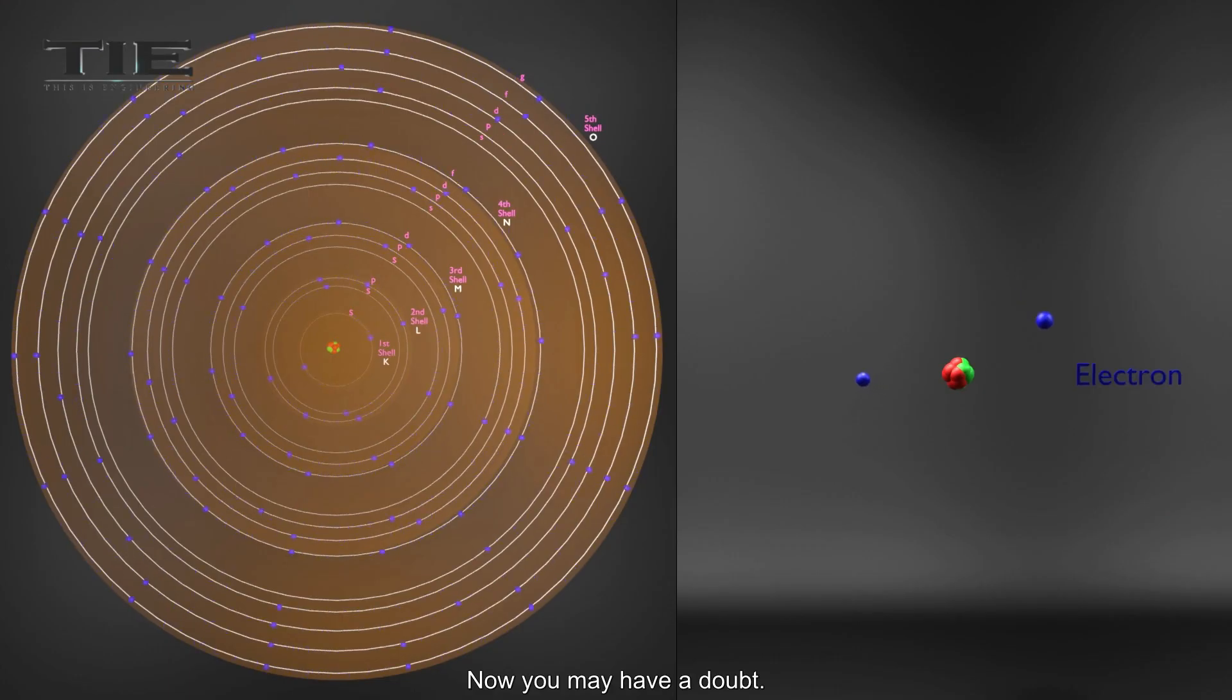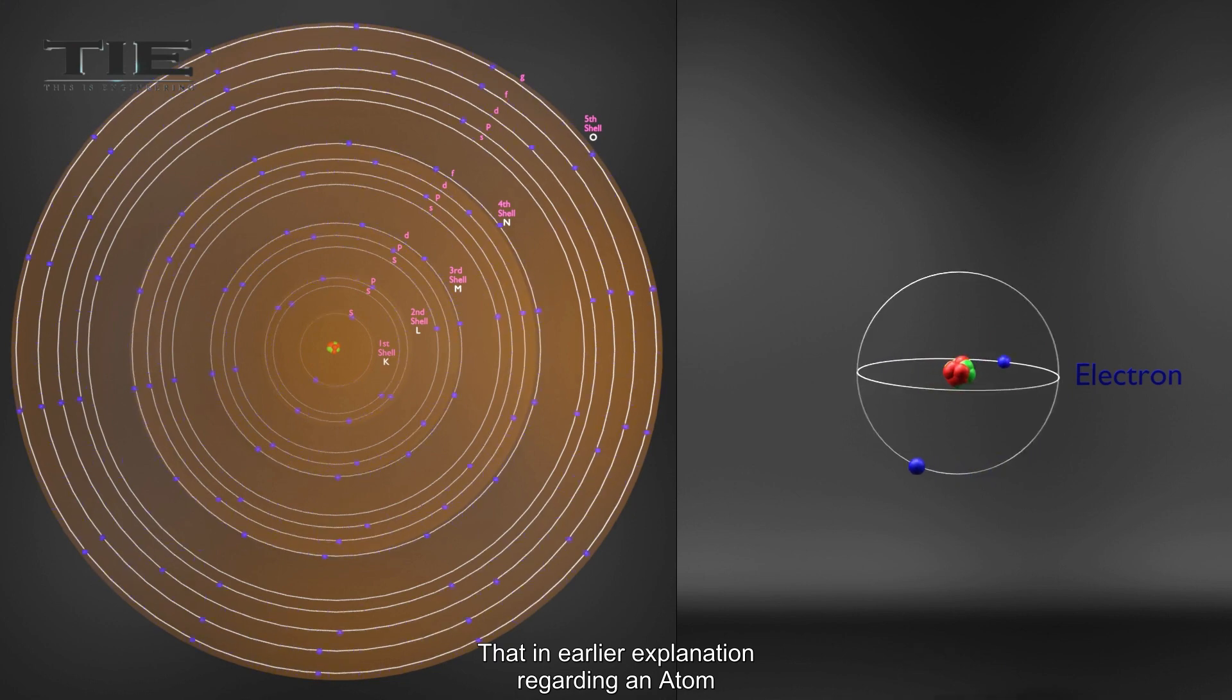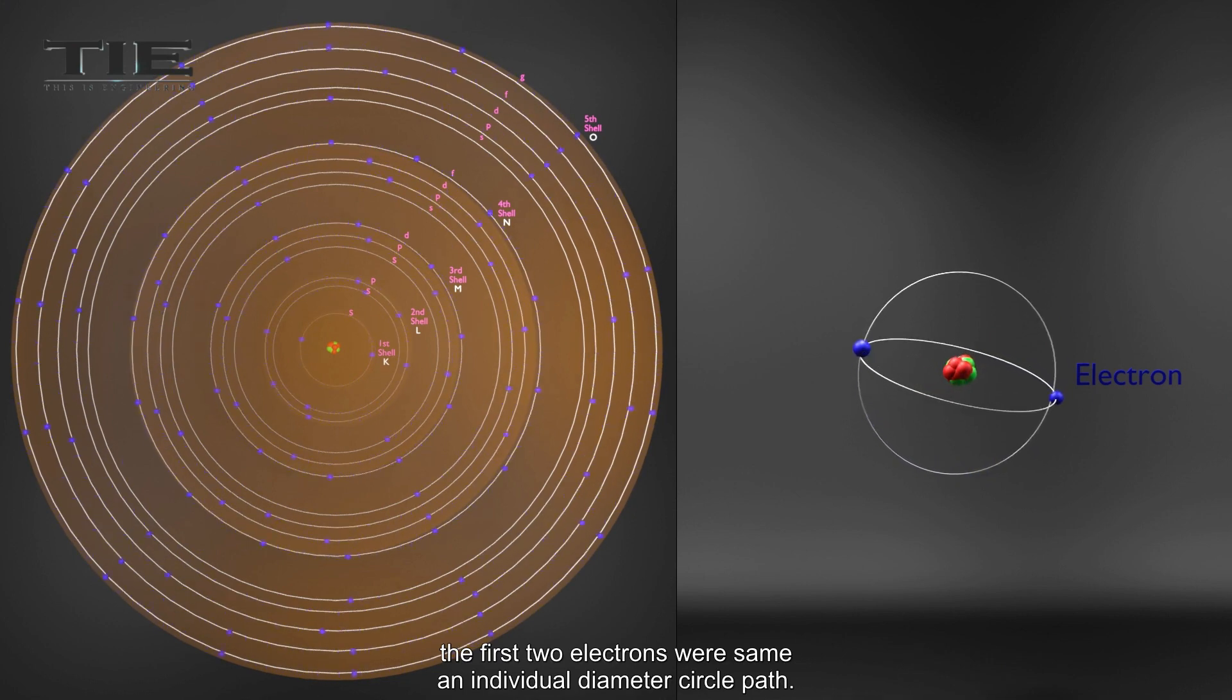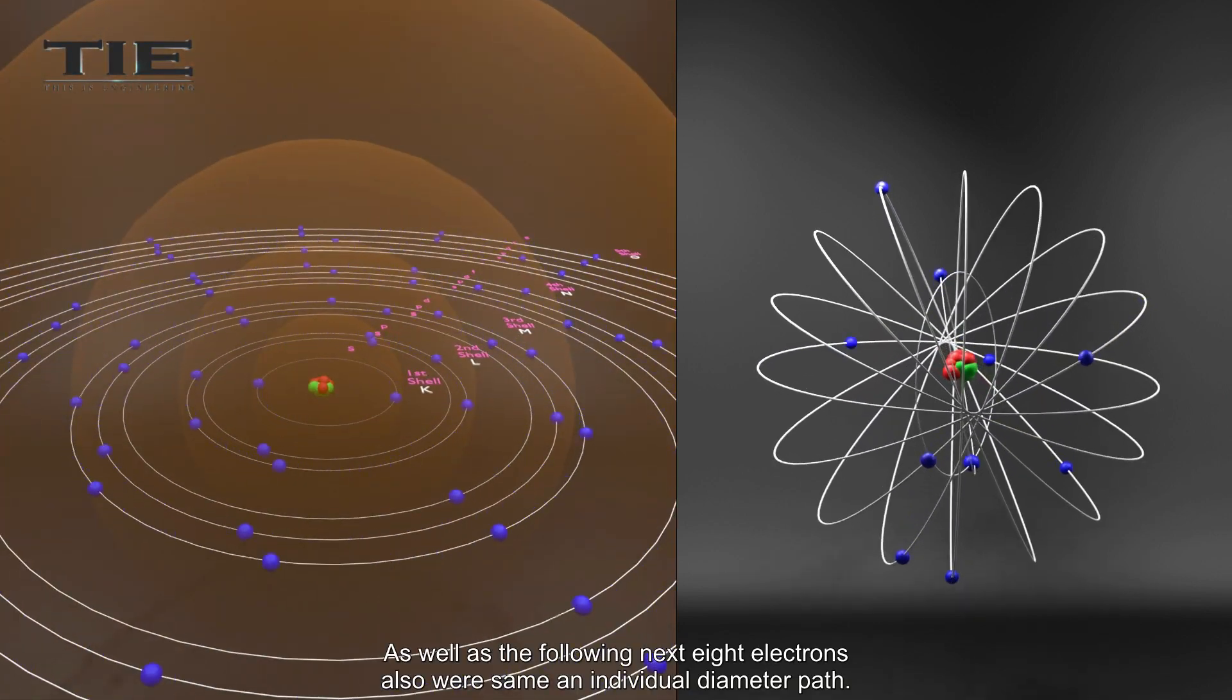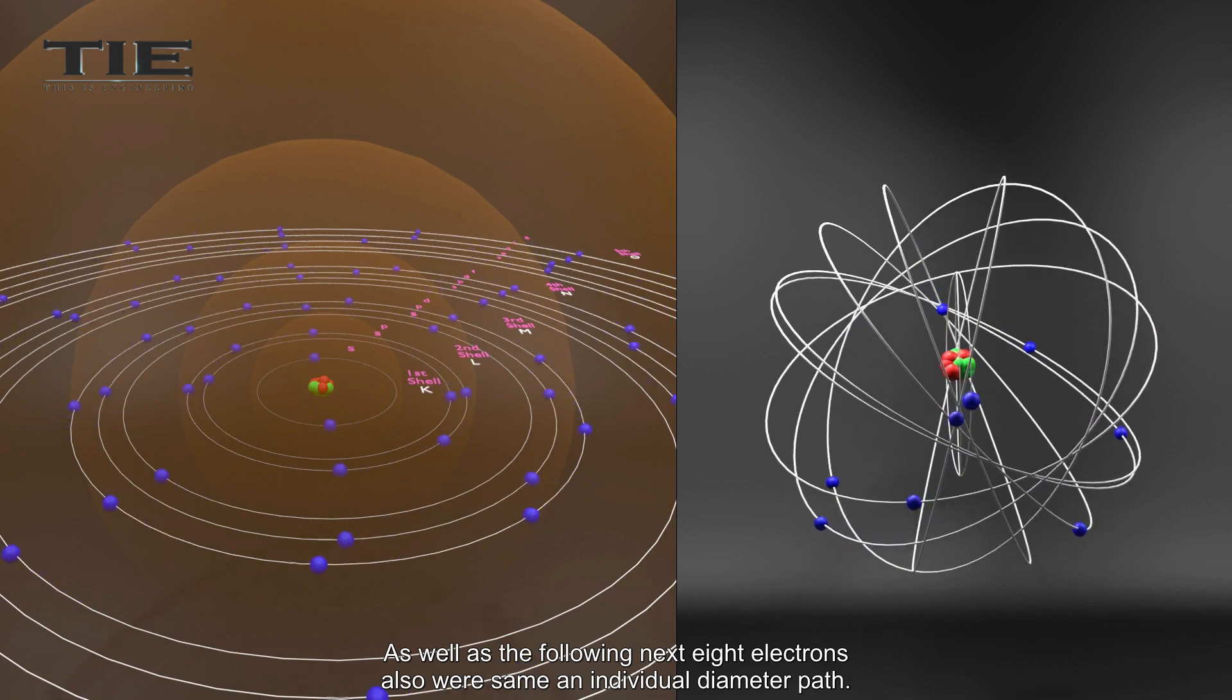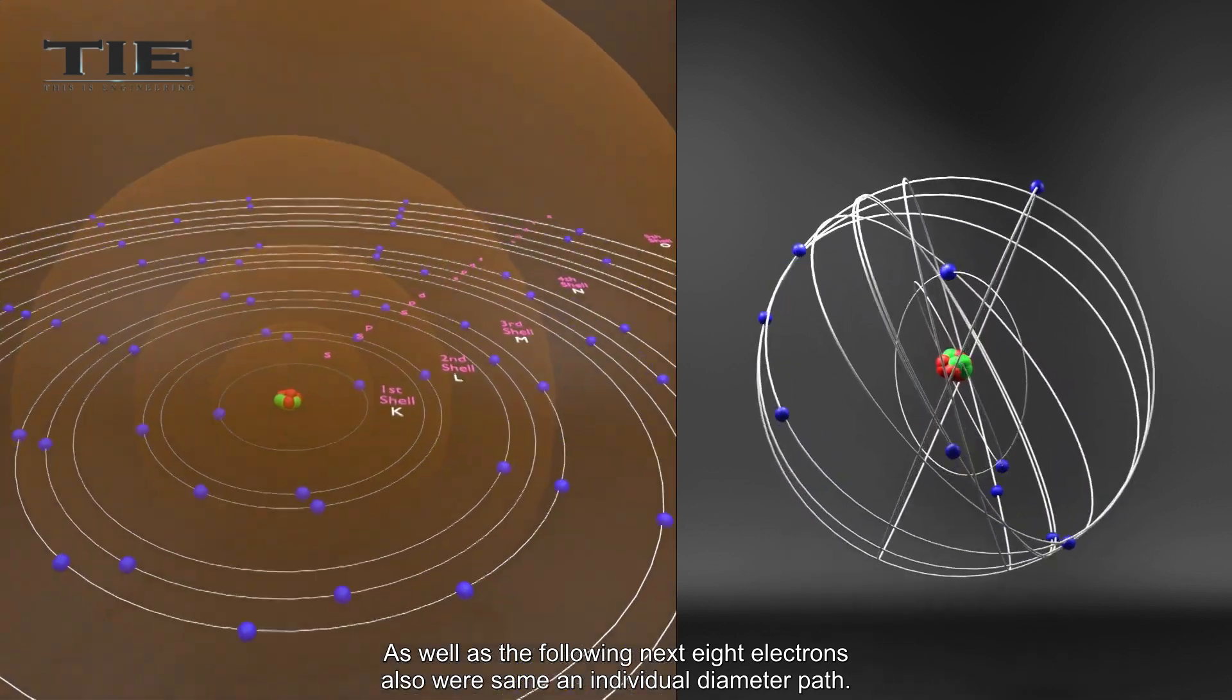Now you may have a doubt. In the earlier explanation regarding an atom, the first two electrons were in the same individual diameter circle path. As well as the following next eight electrons also were in the same individual diameter path.